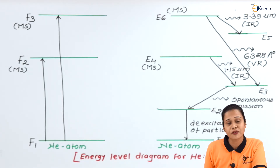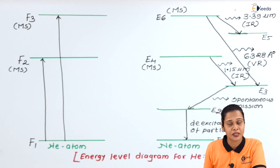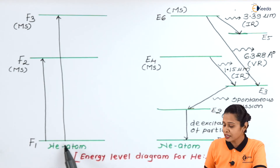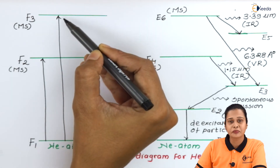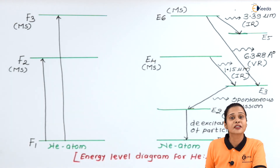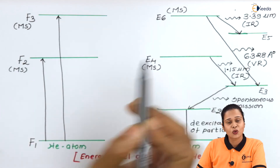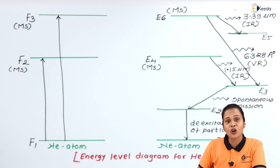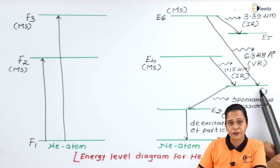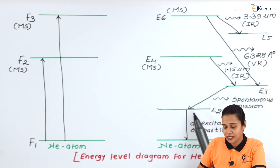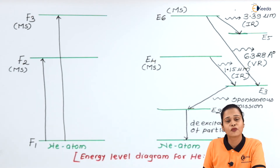Now, why is this called a four-level laser system? The active medium is the Neon atom, and Neon has six energy levels. However, the entire laser process takes place in four steps: first, absorption — the particle absorbs energy from electrons and excites into the metastable state of Helium; second, the Helium collides with Neon and transfers energy, leading to stimulated emission (e.g., E6 to E3); third, the transition E3 to E2 as spontaneous emission; and fourth, E2 to E1 as de-excitation. That is why it is called a four-level laser system.